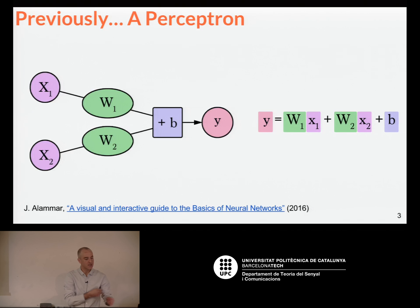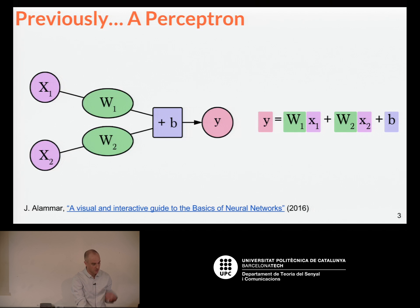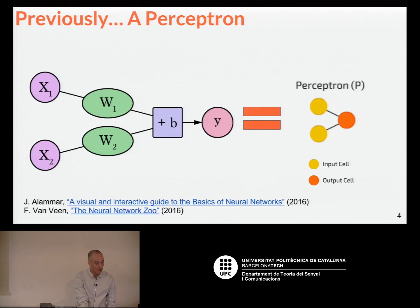As Santi has explained, the most basic architecture we can think about is the perceptron. You just have one neuron, and you want to predict a value y based on inputs x1 and x2. This is the diagram that corresponds to the perceptron.